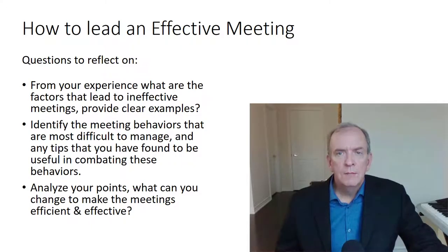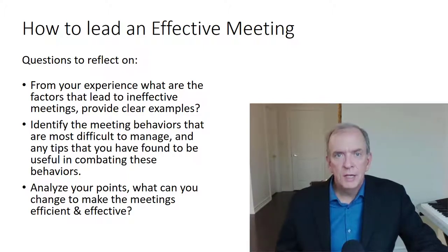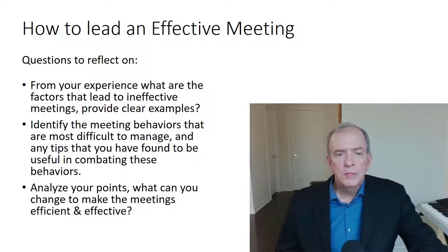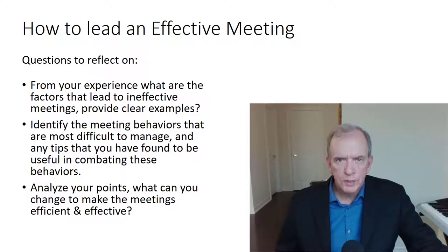There's always people that have their own agendas during meetings and they want to try to hijack the meetings or take them off agenda. That delays things and can be very frustrating for people in the meeting room, because they have so much work to do. If meetings run over or are hijacked, they don't get to the actual topics or goal areas that need to be discussed. Analyze your points — what can you change to make meetings efficient and effective?